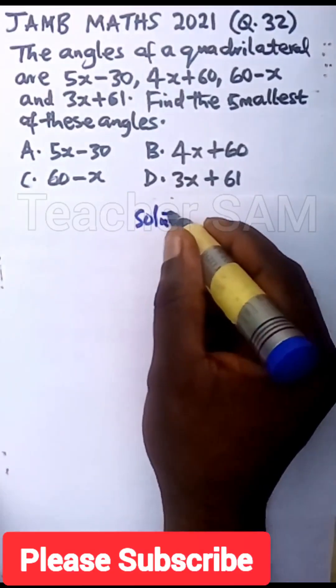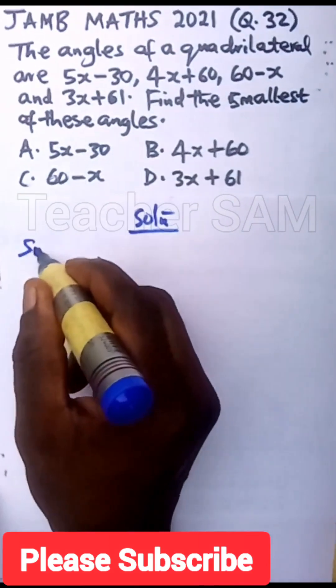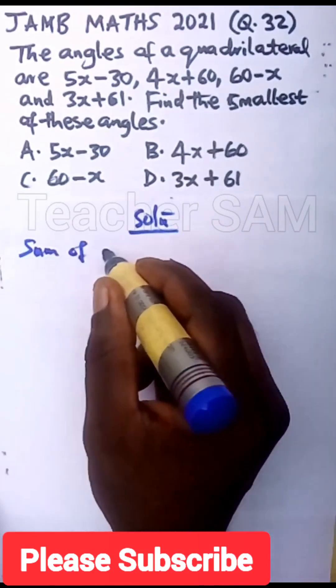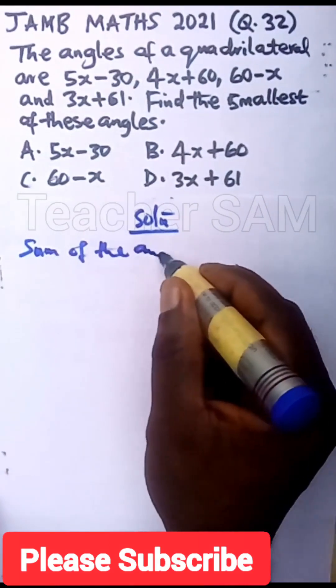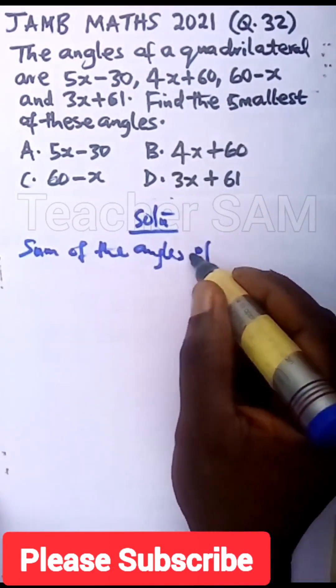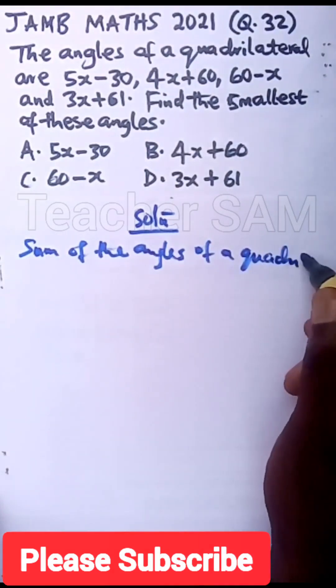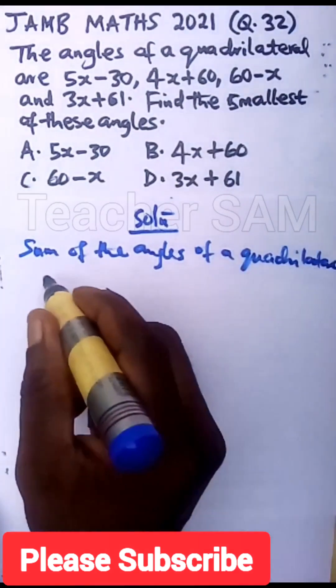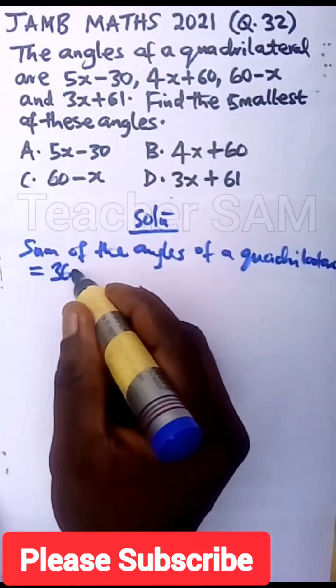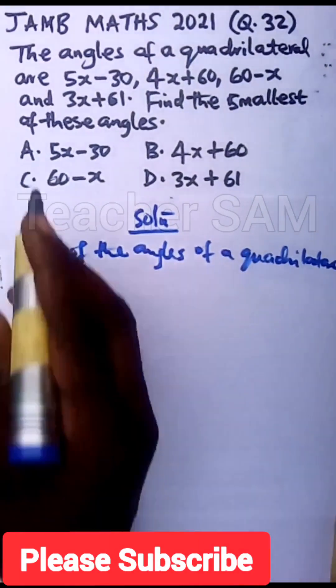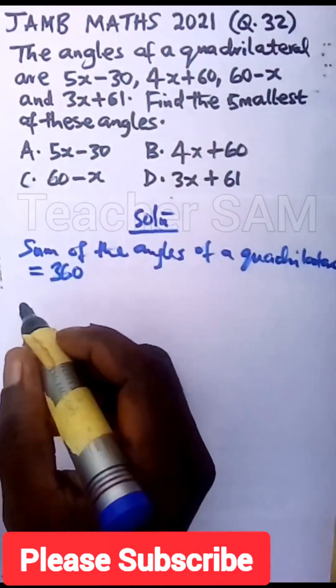Solution. Now sum of the angles of a quadrilateral is equal to 360 degrees. So we have that. Let's sum these angles and equate it to 360 degrees.